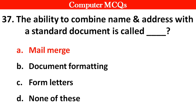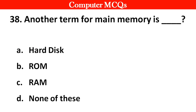Next question: Another term for main memory is — Options: A. Hard disk, B. ROM, C. RAM, D. None of these. Right answer is option C — RAM.